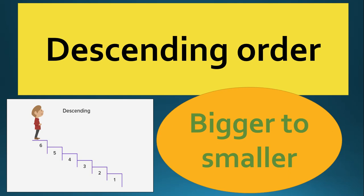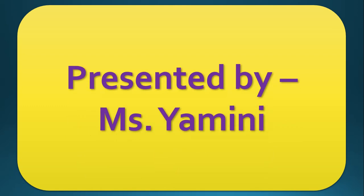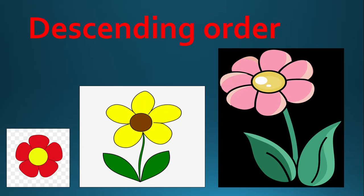Hello kids! Today in this video we are going to learn about descending order. Can you see there are three flowers, and the flowers are arranged according to their size. This flower is the smallest. The yellow flower is bigger than the red flower, and the pink flower is the biggest.